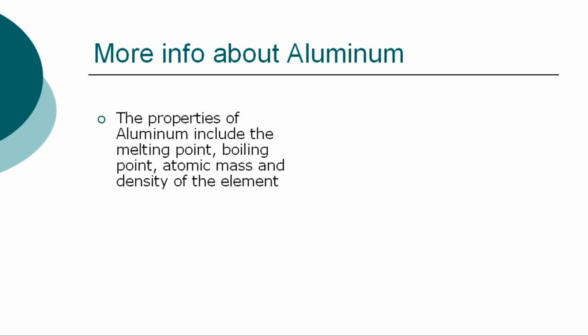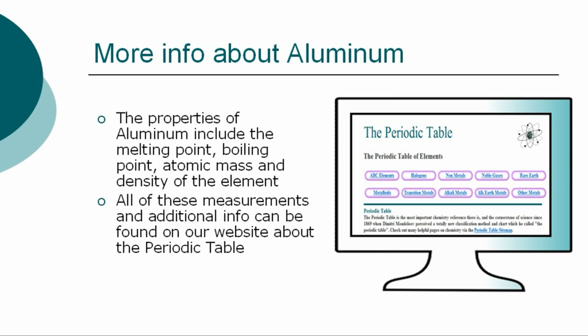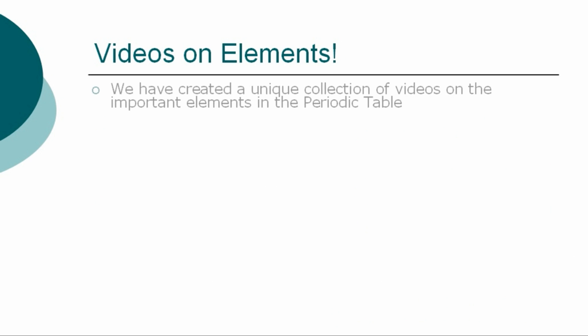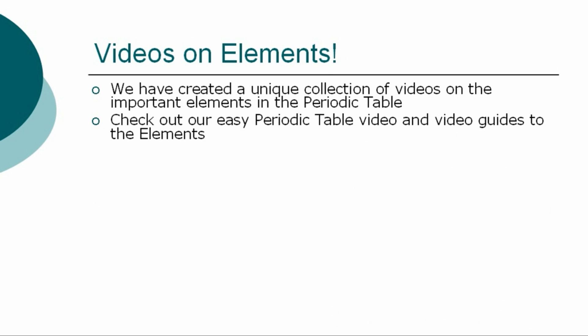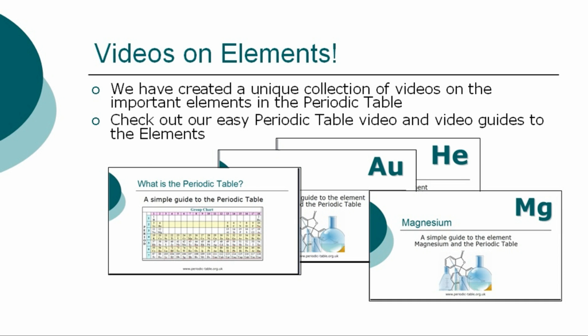The properties of aluminum are classified by many other factors, including the boiling point, atomic mass, and density of the element. All of these precise measurements can be found on our website. So ends our simple guide to the element aluminum. Check out our easy video guides to the elements via our website.